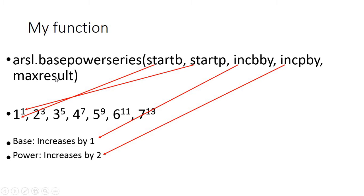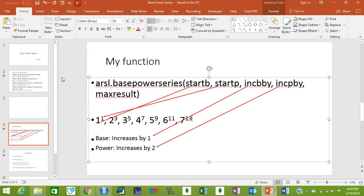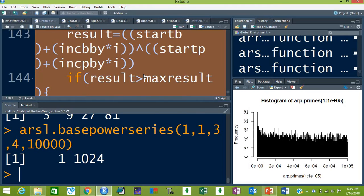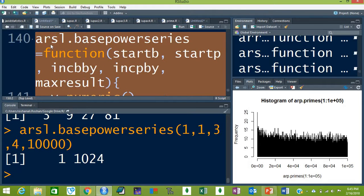The maximum result acts like a breakpoint in the loop. If you do not put a condition like 100 or 200, the function will go on and on because it will keep increasing the base and the power and will never stop. You need to put a condition to stop the loop. Now let's test this function in R — first let me show you the code.